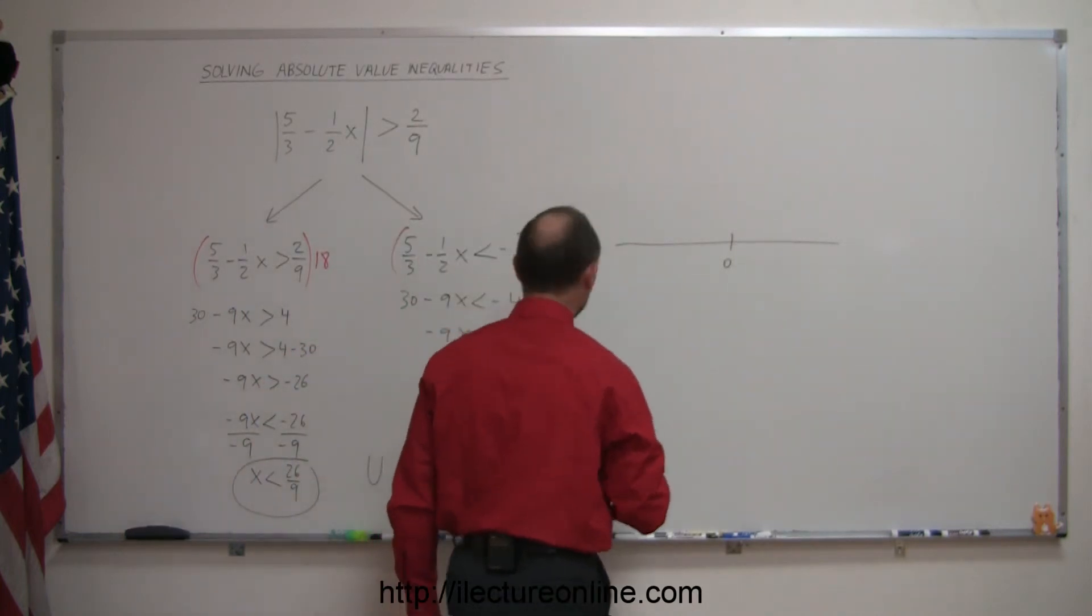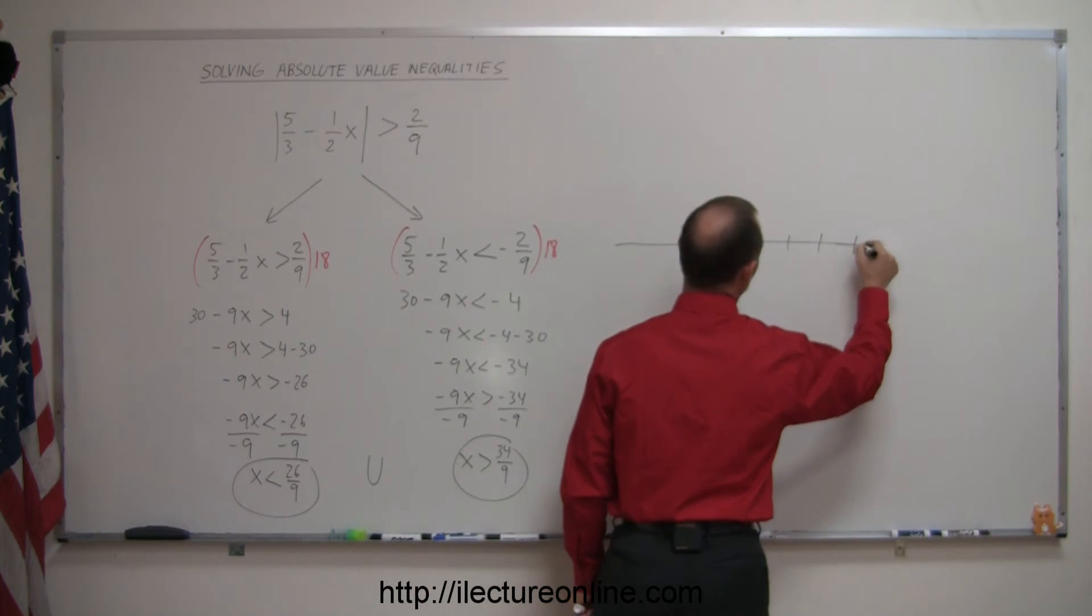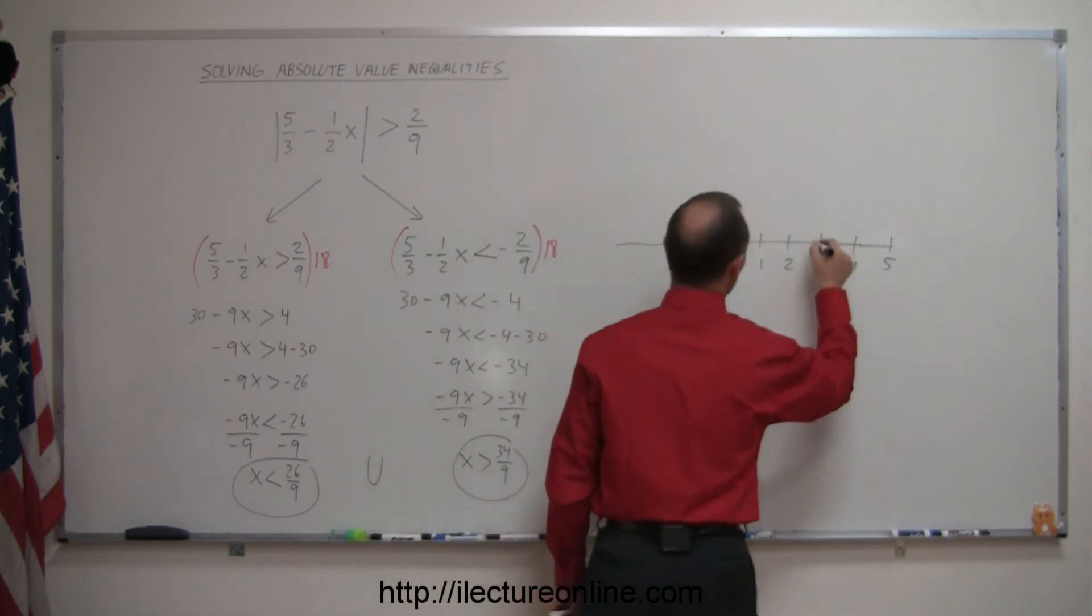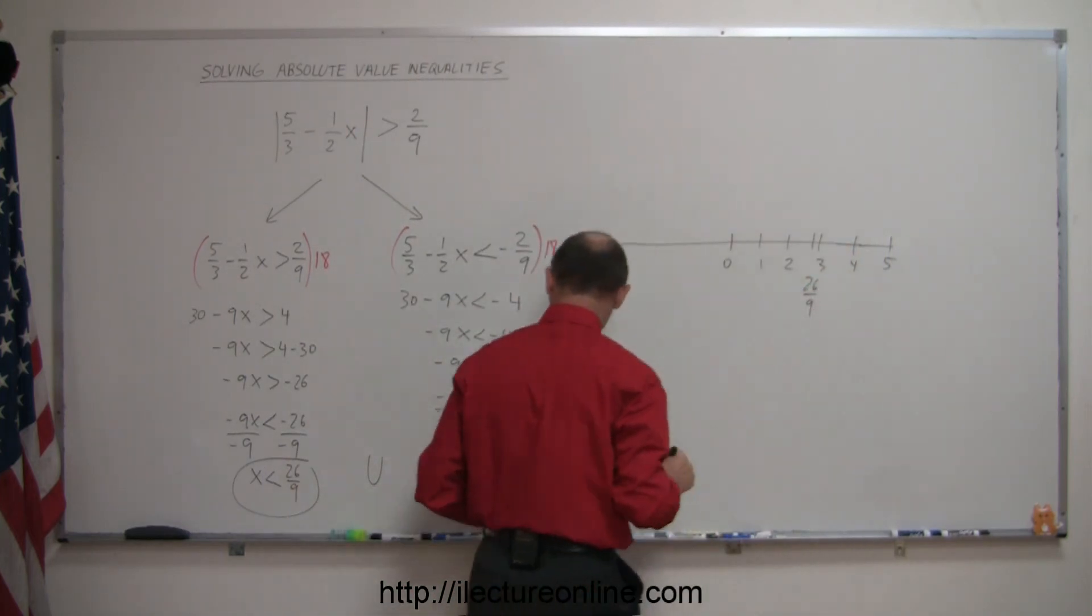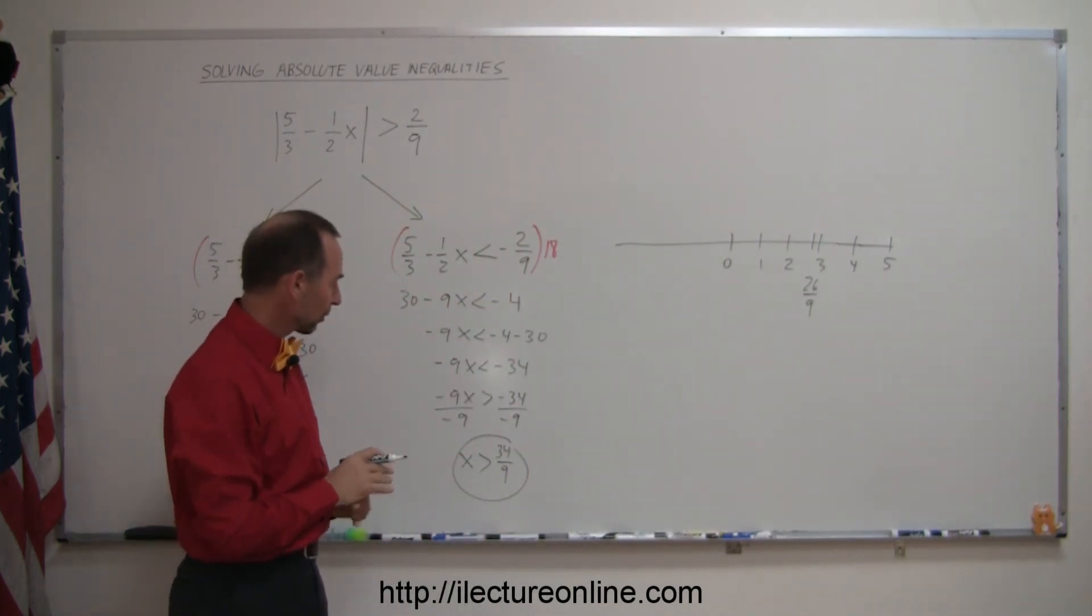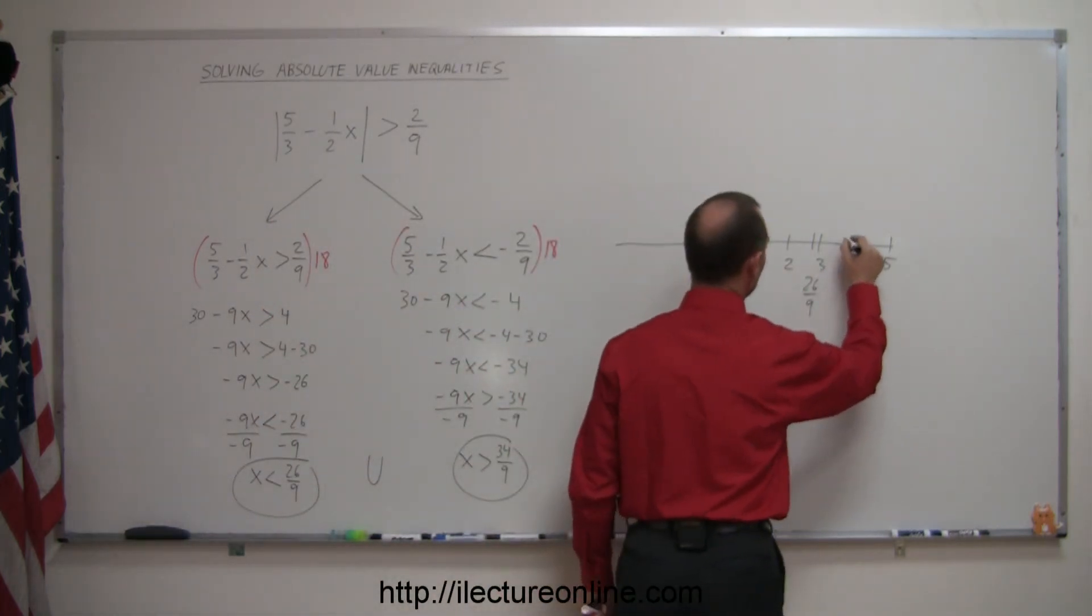26/9 is almost 3, so we have 1, 2, 3, 4, and 5. The number 26/9 is just shy of 3, and the number 34/9 is just shy of 4 - 4 times 9 is 36, so just shy of 4. So over here we have 34/9.